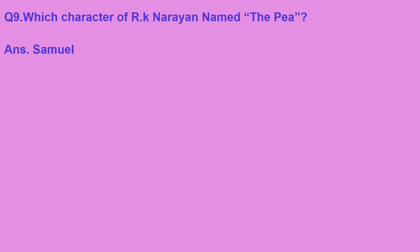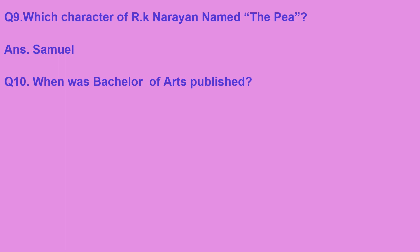Which character of RK Narayan was nicknamed 'The Pea'? Samuel is a character in RK Narayan's novel Swami and Friends. He is a friend of Swami, and because of his short height, his classmates teased him with the nickname 'The Pea.' Next question: when was Bachelor of Arts published? Bachelor of Arts is part of RK Narayan's trilogy — first is Swami and Friends, second is Bachelor of Arts, and the third is The English Teacher. Bachelor of Arts was published in 1937.